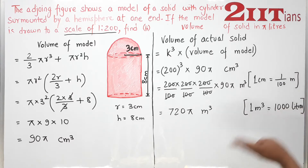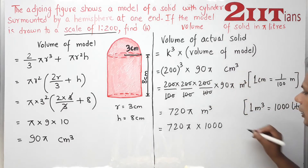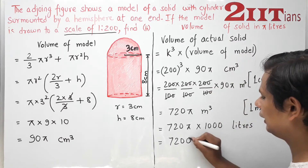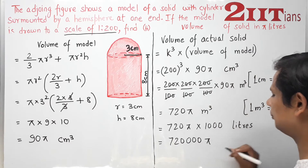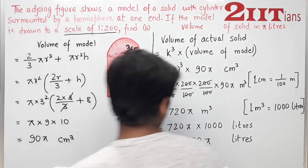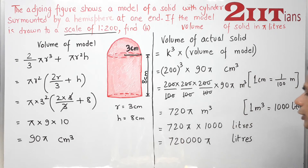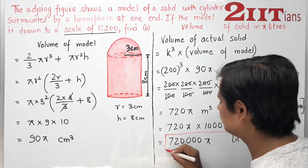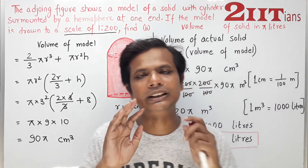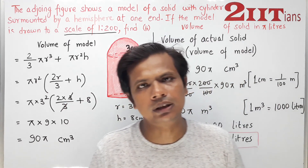Since 1 meter cube equals 1000 liters, the volume of the actual solid is 720π × 1000 liters = 720,000π liters. This is a very large value with four zeros — you can read it as 7,20,000π liters. This is our final answer. This was a question where the concept of similarity was mixed with mensuration — a very good question.